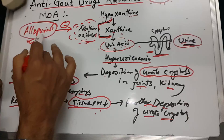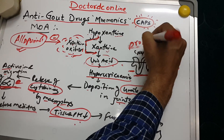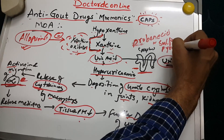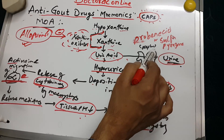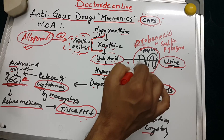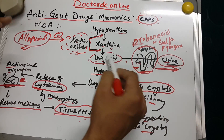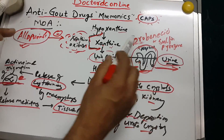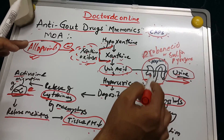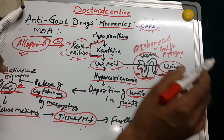The second group of chronic gout drugs — probenecid and sulfinpyrazone — inhibit the active tubular reabsorption of uric acid in the proximal convoluted tubule. In gout, there is decreased excretion of uric acid causing hyperuricemia, but after giving probenecid or sulfinpyrazone, they act in the proximal convoluted tubules of the nephron to reduce reabsorption of uric acid, resulting in increased urinary excretion of uric acid.